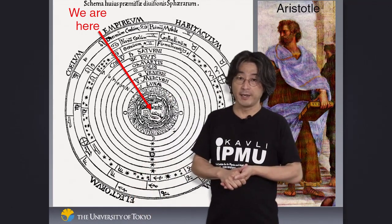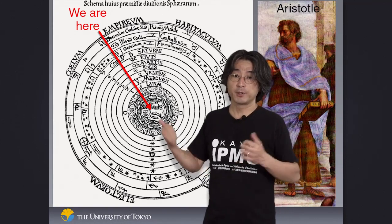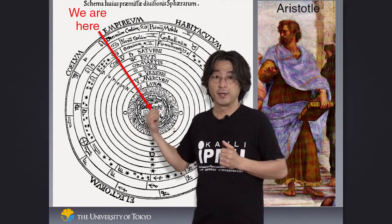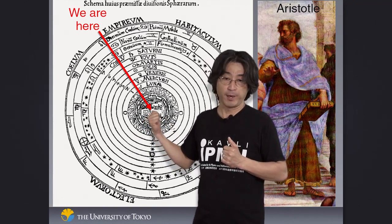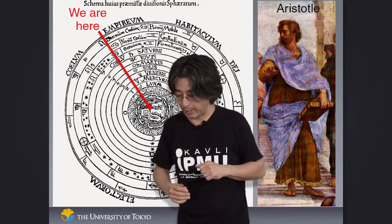But science goes by data. The reason why we don't think this way anymore is because the observations don't agree with this picture. It's not that we think ancient people are crazy, it's just that this idea doesn't work. So how do we know that?